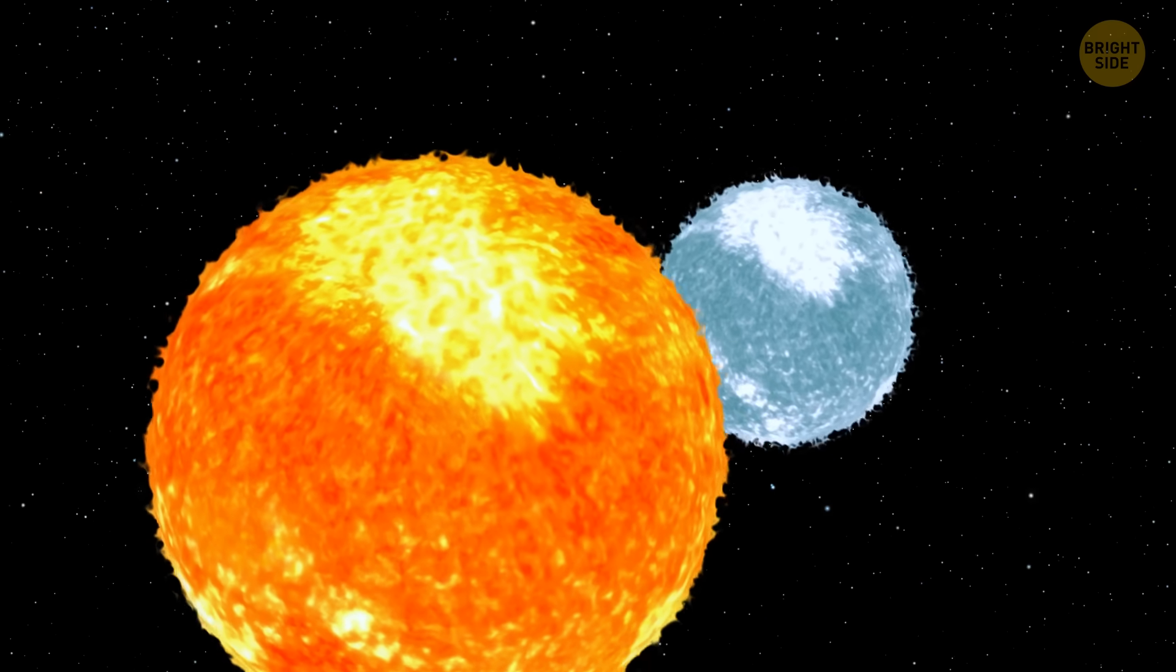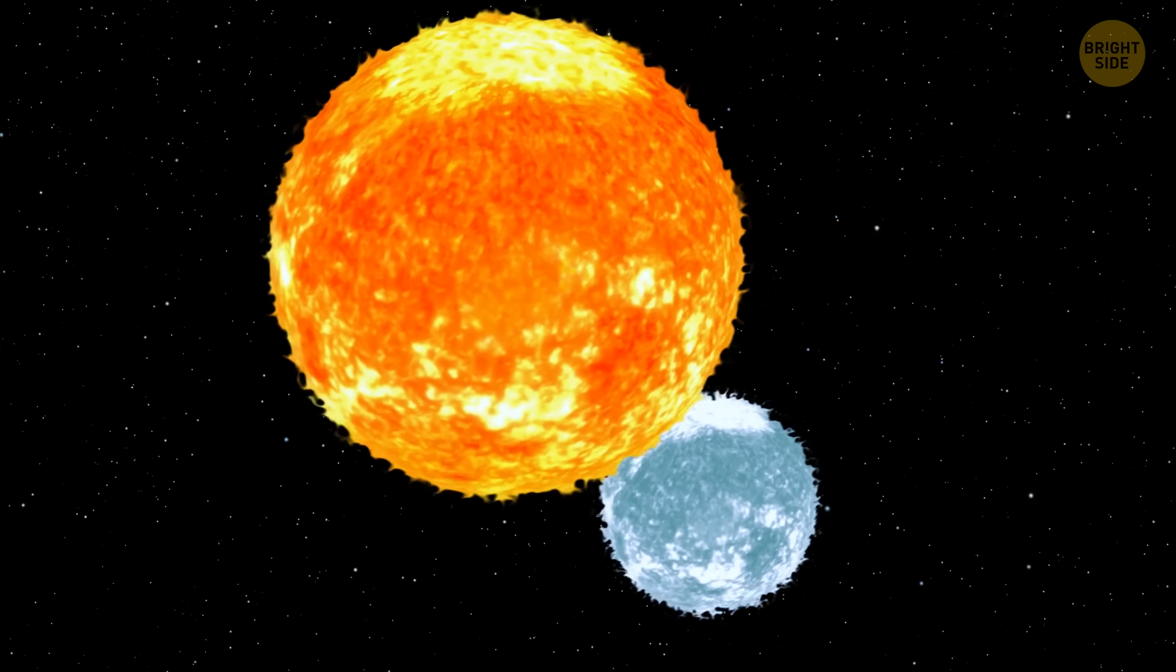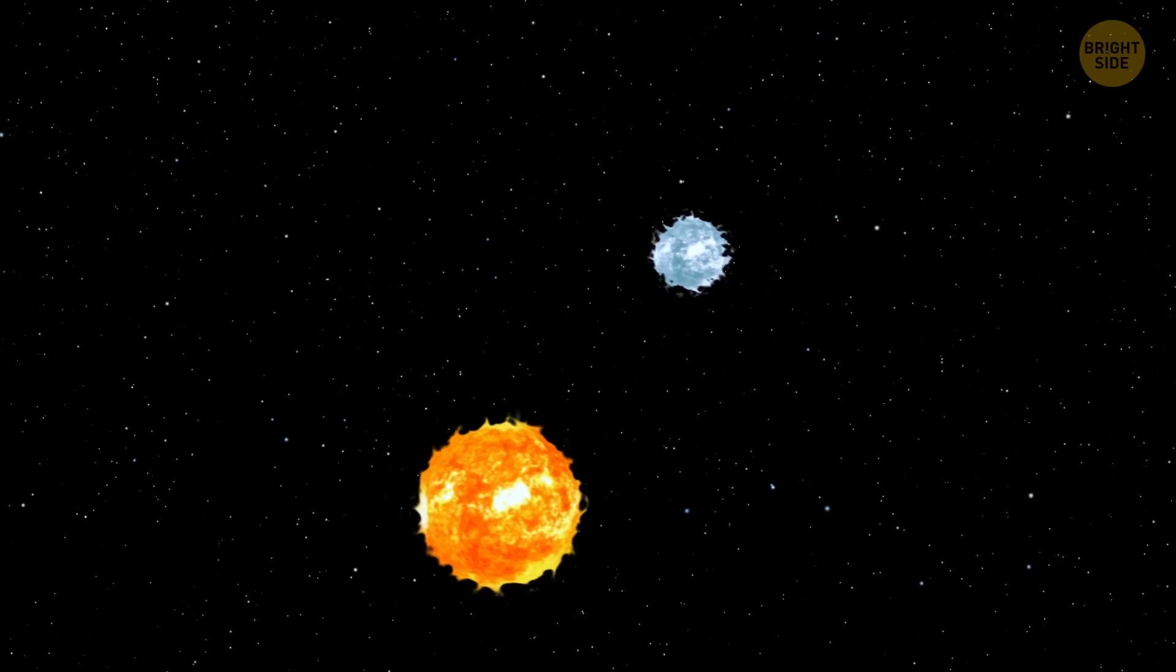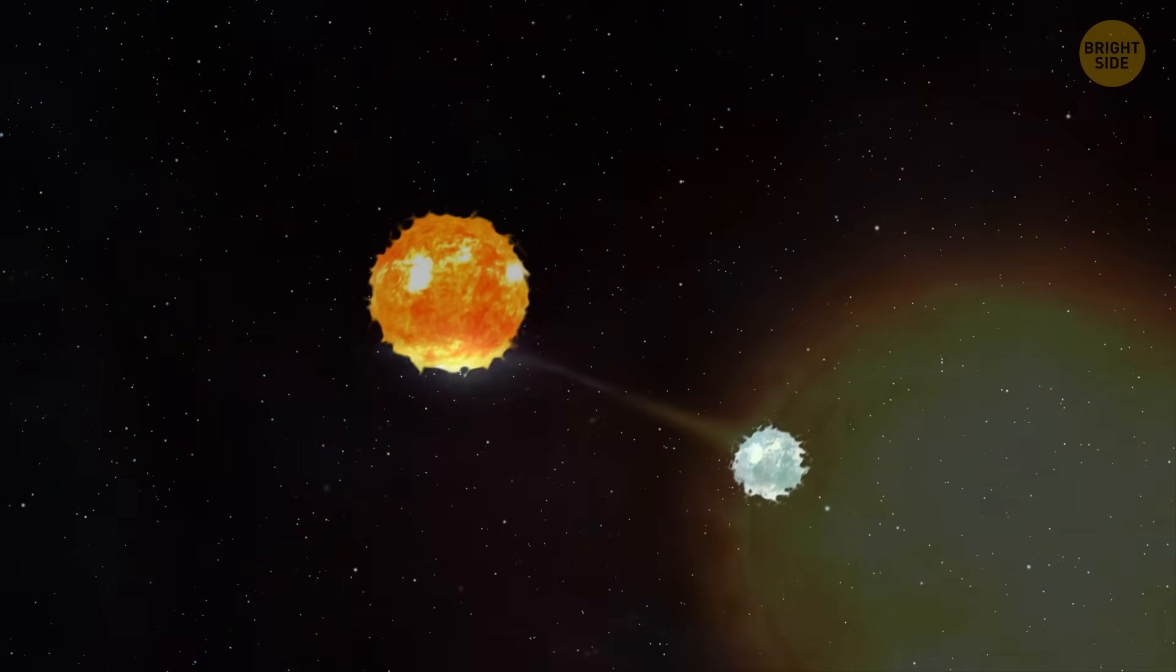Also, there's another type of supernova. It usually happens in systems where two stars orbit each other, and at least one of these stars is a white dwarf the size of our planet. If such a star collides with another, or pulls too much matter from its neighbor, it can explode into a supernova.